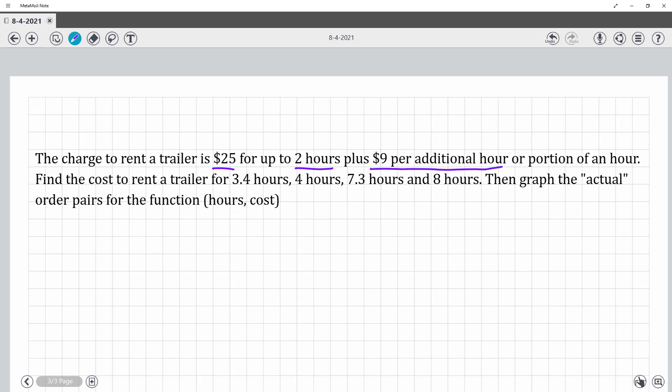This was the part that was a little confusing because you actually don't use portion of an hour on this problem. So the function, the cost, would be simply $25 plus $9 times that additional time.